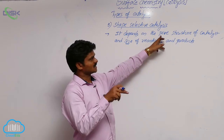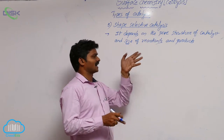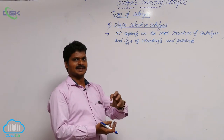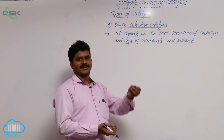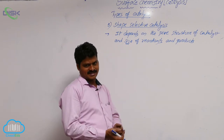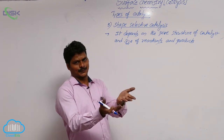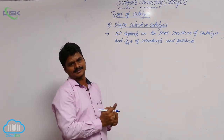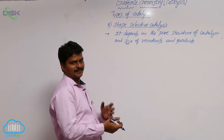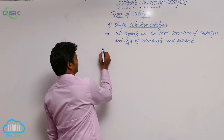Here, the size of catalyst pores and size of reactants are similar. That's why reactants simply enter into the pores of the catalyst, there they undergo reaction, and after the formation of products, those products come out of the pores. This type of process is called shape selective catalysis.